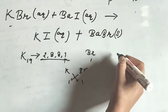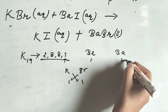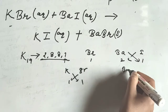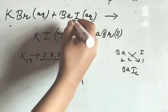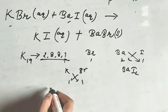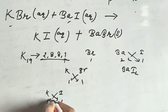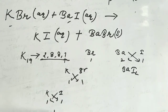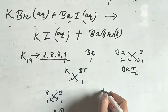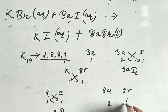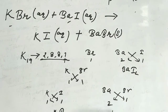Next, Ba has valence 2 and I has valence 1. Cross multiplying gives BaI₂. Similarly, Ba has valence 2 and Br has valence 1. Cross multiplying gives BaBr₂.